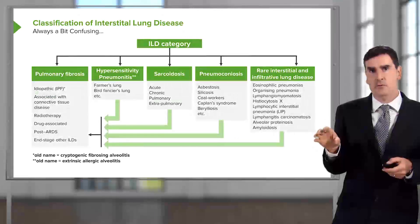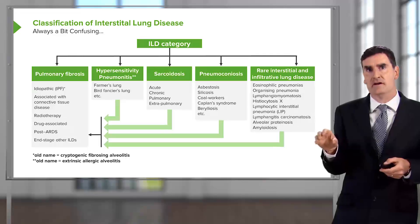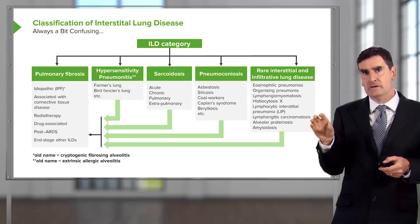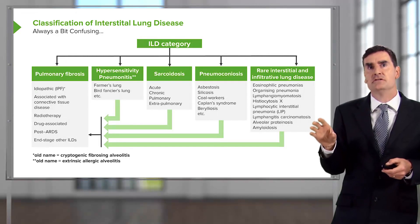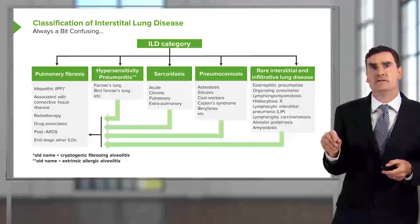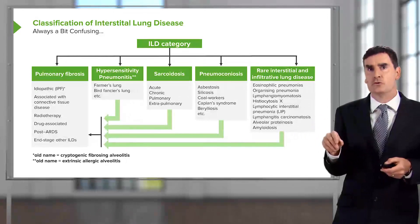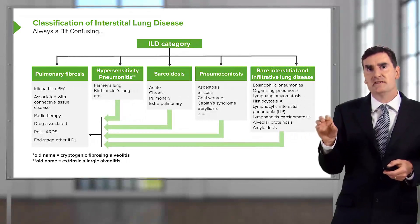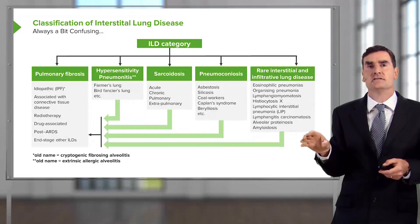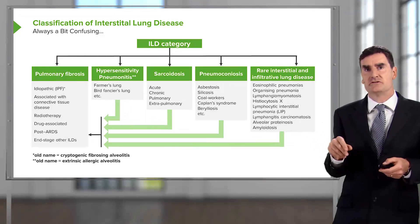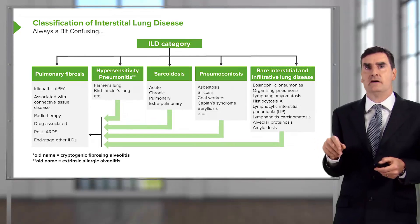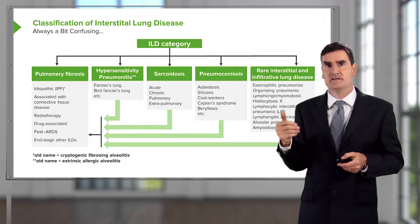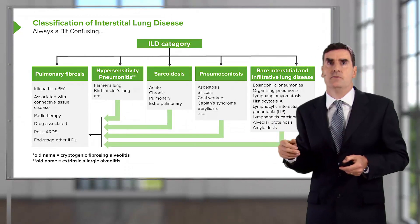Another important point from this slide is that there are old names for some of these diseases. For example, idiopathic pulmonary fibrosis used to be called cryptogenic fibrosing alveolitis, and hypersensitivity pneumonitis used to be called extrinsic allergic alveolitis. These terms are now interchangeable.